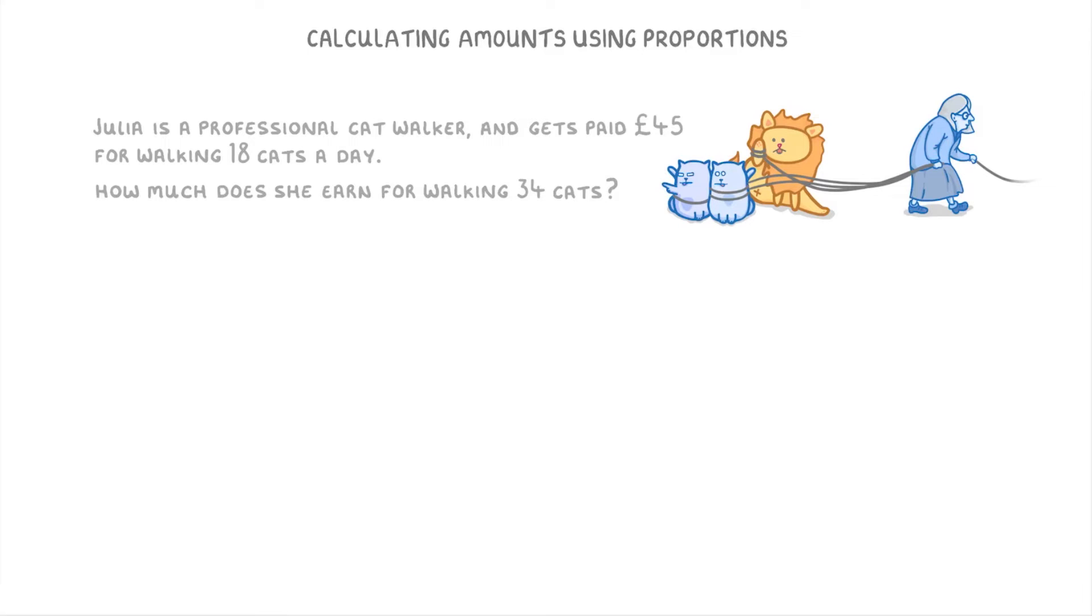So this time, the first thing we want to do is figure out how much she gets paid per cat that she walks. Which we can do by dividing the total of £45 by the 18 cats, which gives us 2.5. Or in other words, she gets paid £2.50 per cat that she walks.